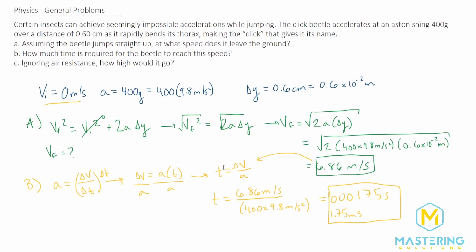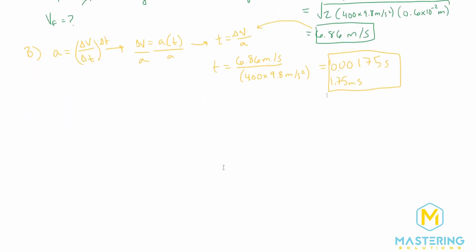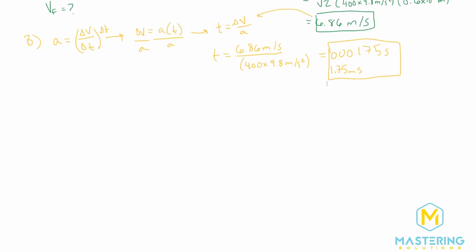Now let's give us some more room. And they say ignoring air resistance, how high would it go? So for part C, we're going to be finding the delta Y. So we'll be using v final squared is equal to v initial squared plus 2A delta Y.